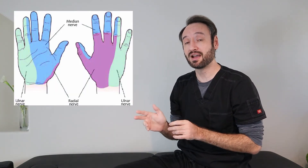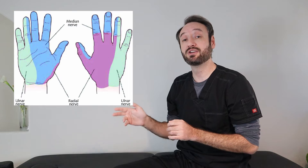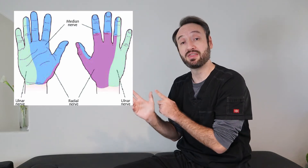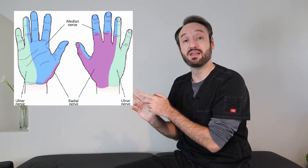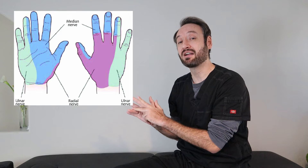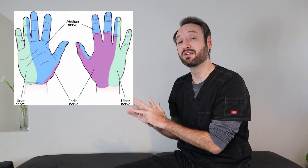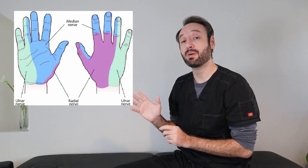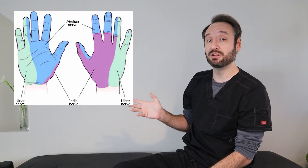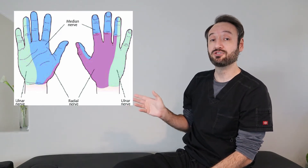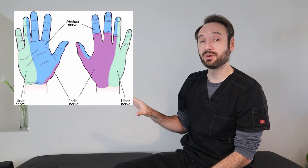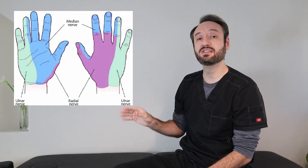Always remember it's the palmar side of the hand. That median nerve distribution is the thumb, the index finger, the middle finger, and the lateral side of the ring finger for the palmar distribution. As you can see from this picture here, this chart, the dorsal part of the hand is a little different.